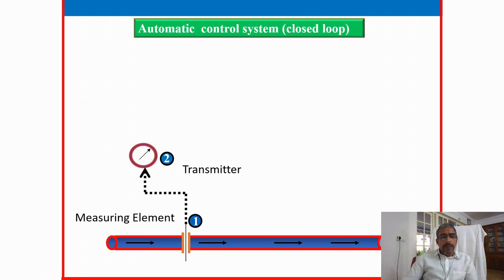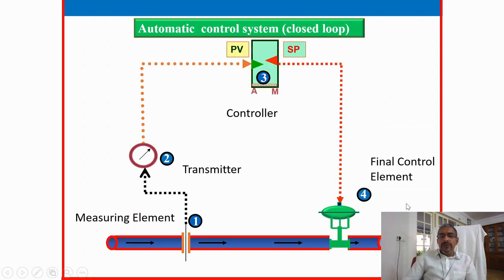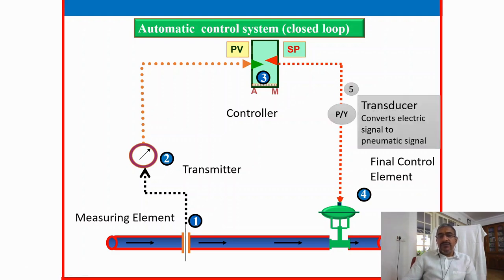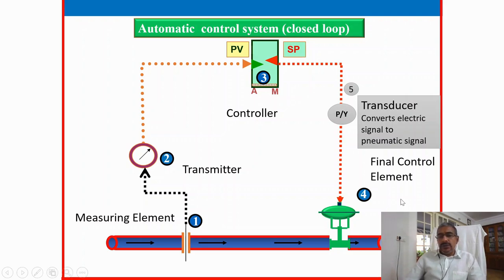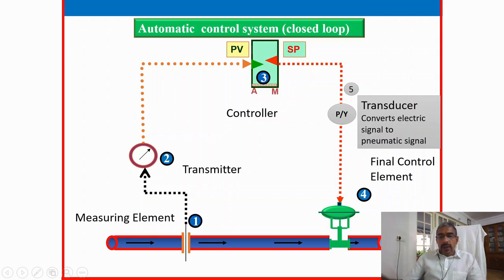The automatic control loop has these components: measuring element, transmitter, controller, final control element — those four we have studied already. One more item added: fifth is PY — the converter or transducer — which converts electrical signal to pneumatic signal. This is added when the controller is an electronic controller. If the controller is a pneumatic controller, we still have to add a transducer because the final control element — the control valve — uses pneumatic signal. Pressurized air is used to lift the opening element of the control valve, so we must use a transducer or converter to convert electric signal to pneumatic signal.